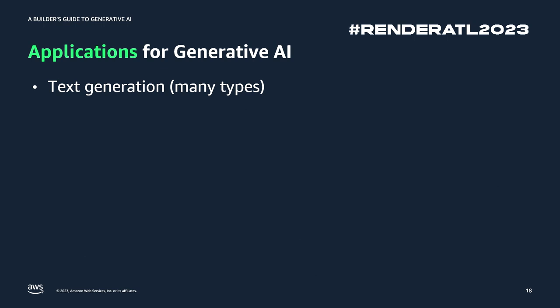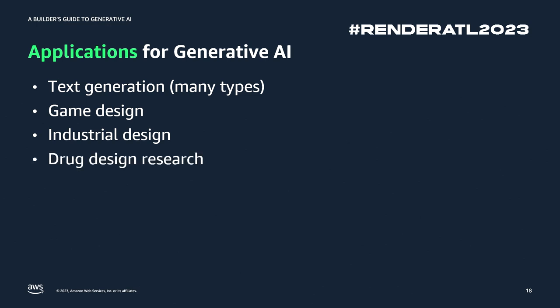Code generation is one type of application for generative AI. Text generation you see in so many different examples. Game design — generating NPCs that can talk based on context, generating entire worlds. Industrial design, 3D printing, drug design research, protein folding, image generation. The possibilities are endless. There are so many applications that can be built with AI, and I'm really excited to see what you're all going to be building.